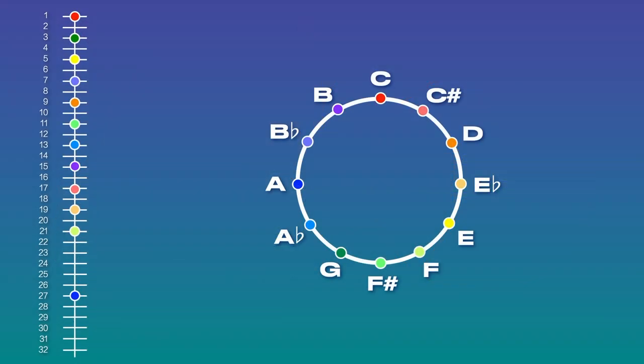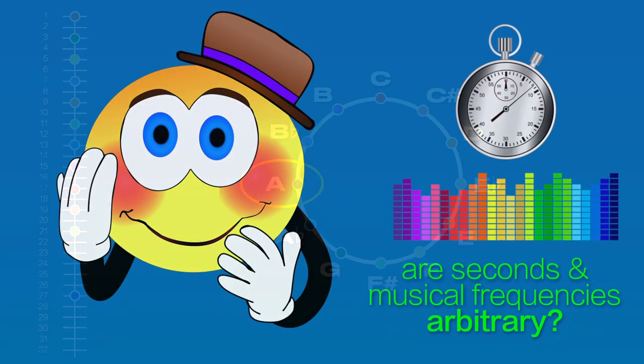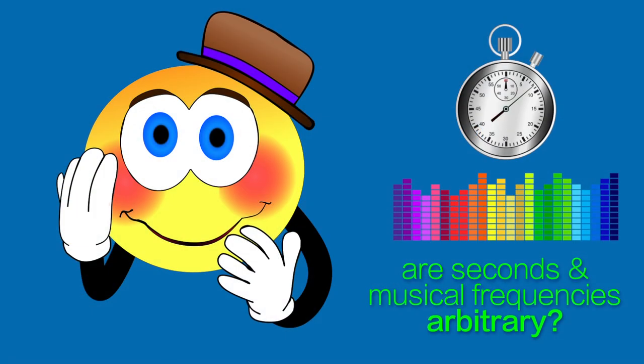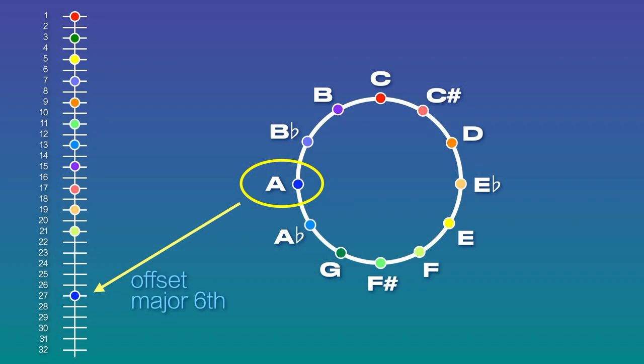But in the harmonic series there is something special about the note of A, and there's a reason why the harmonic series tunes it to 432. Before even looking at the issue of whether or not the second as a unit of time is arbitrary, I want to explore why A432 is the most important note of the harmonic series.